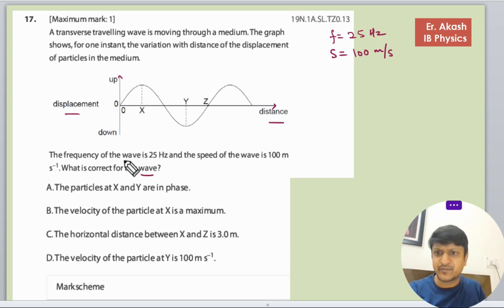Let's see what's happening. Option A: The particles X and Y are in phase. Definitely not, because this particle will now move downwards and this particle will move upwards. They are not in phase, so this is not the right answer.